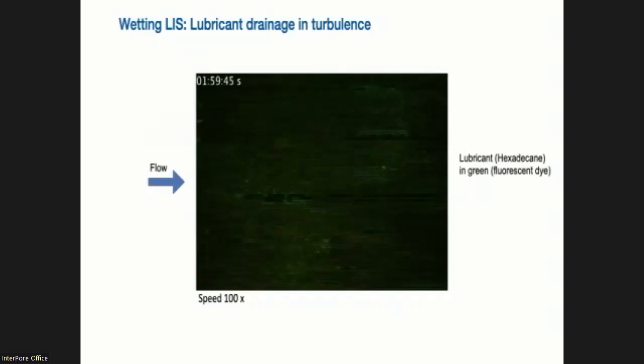So we have full drainage, and this is not so surprising because the shear from the overlying flow is basically dragging the oil with it downstream and causing drainage. And what we did here is that we followed the fabrication rules of LIS. Clearly, if you want to lubricate a surface, you should treat the surface such that the lubricant likes to wet the surface.